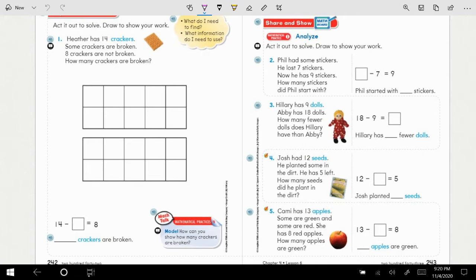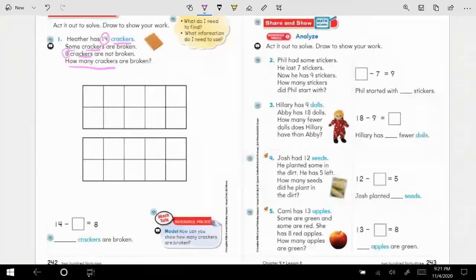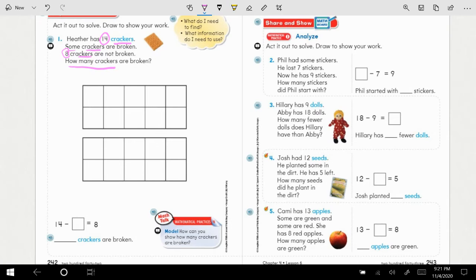So let's open it up. We're looking at these two pages now. So our job, as we are reading each of these stories, is to identify the whole and the parts. So let's read number one. Heather has 14 crackers. When I see a clue, I'm going to circle it. Some crackers are broken. Some, I don't know how many. Eight crackers are not broken. How many crackers are broken?